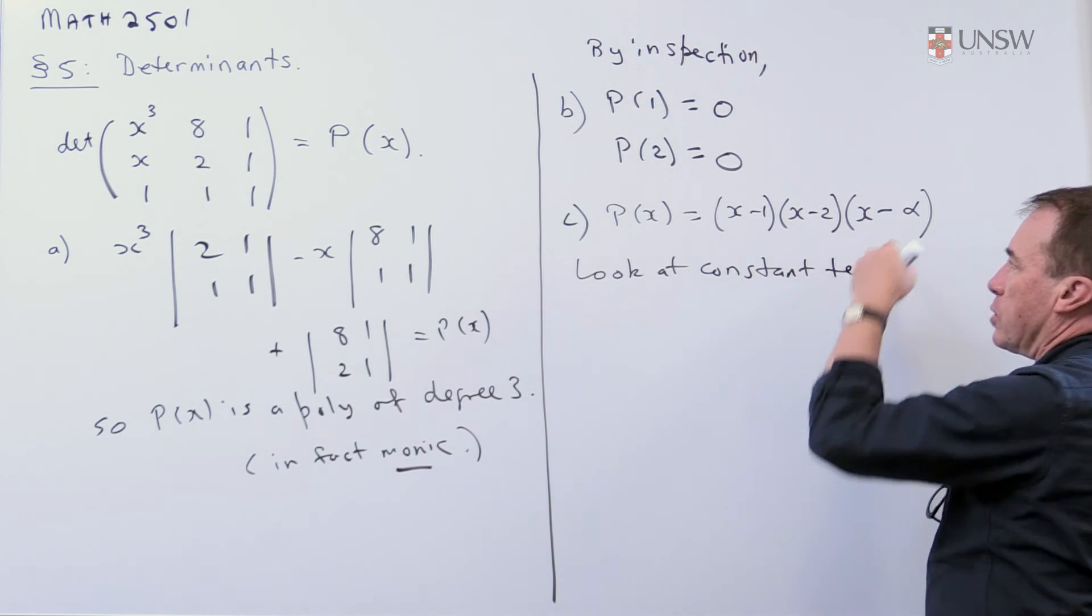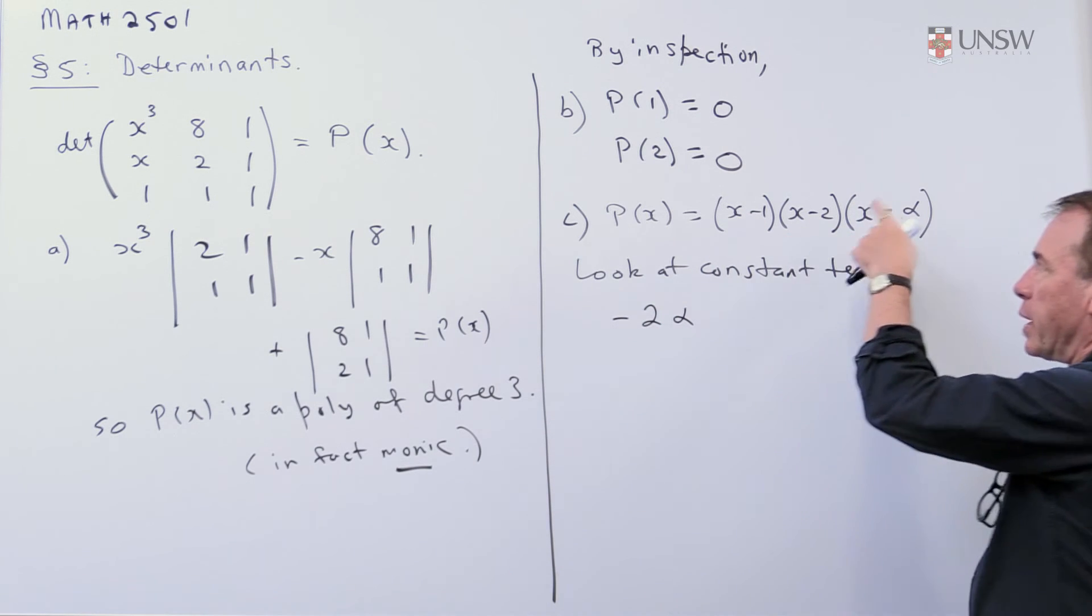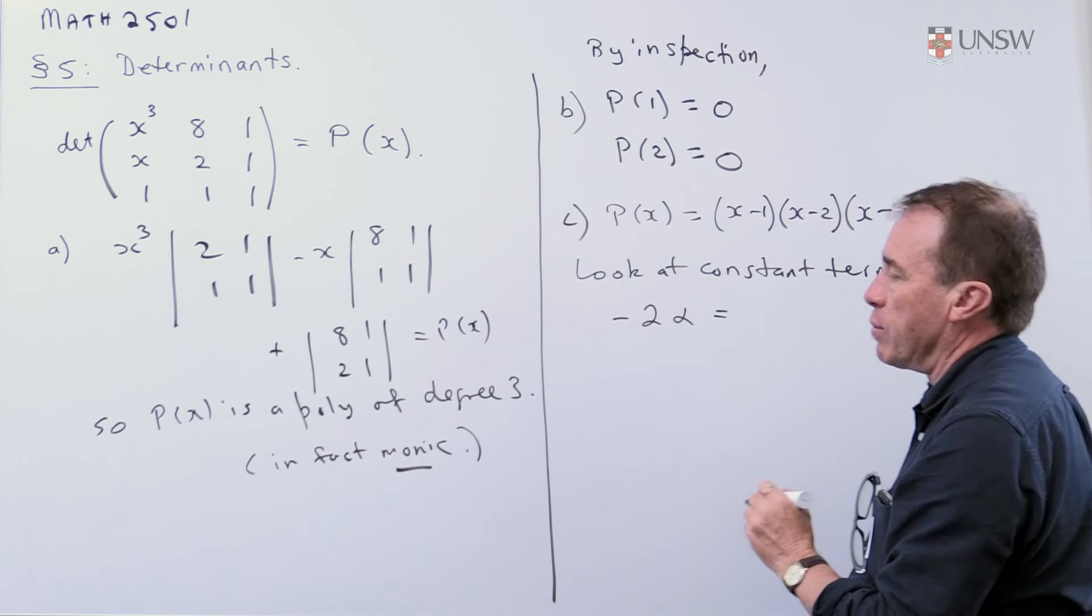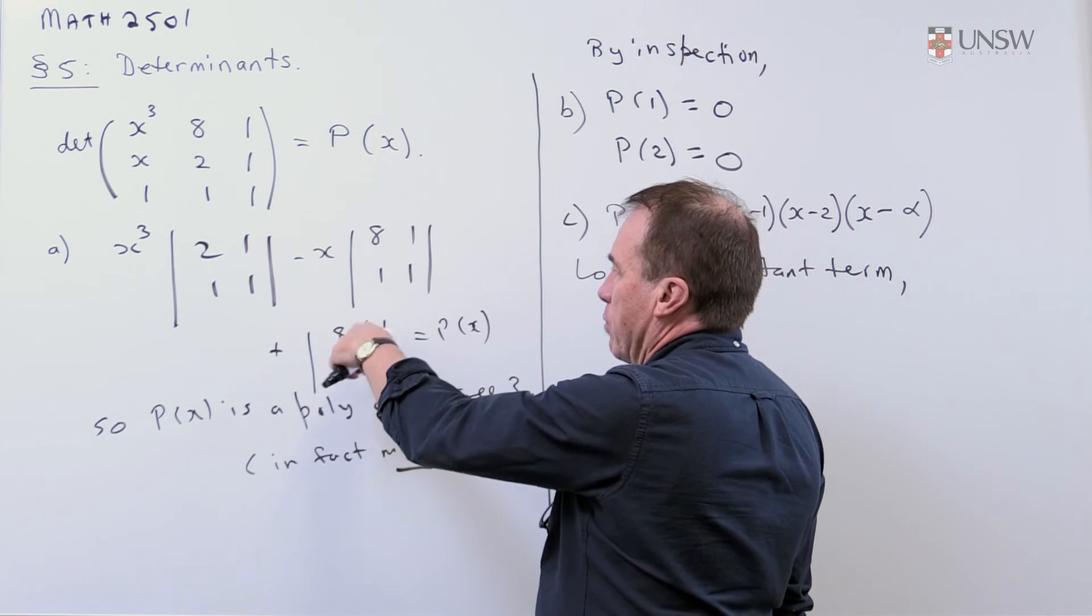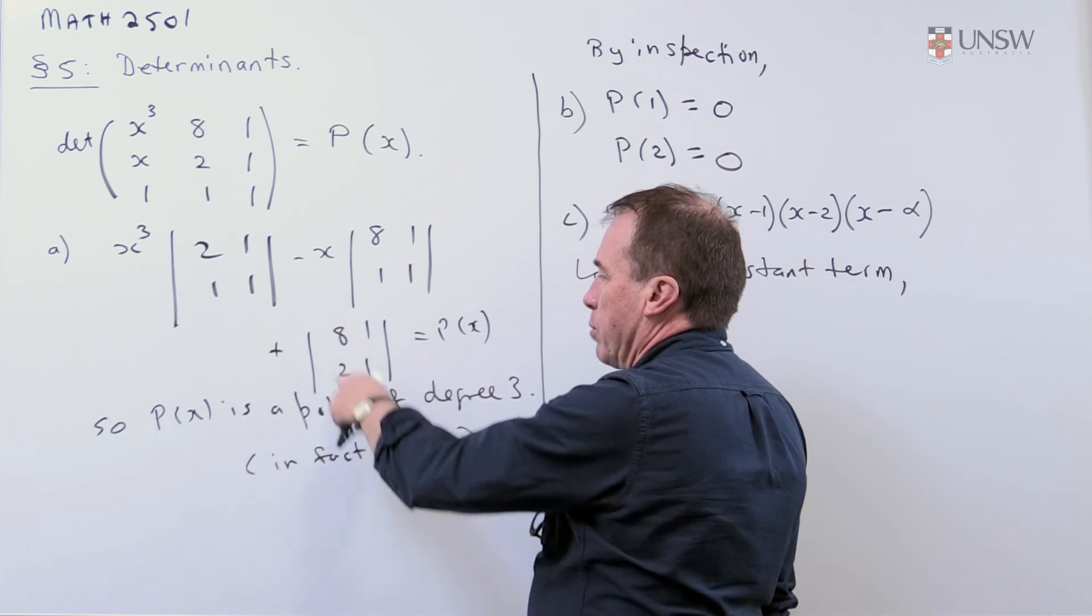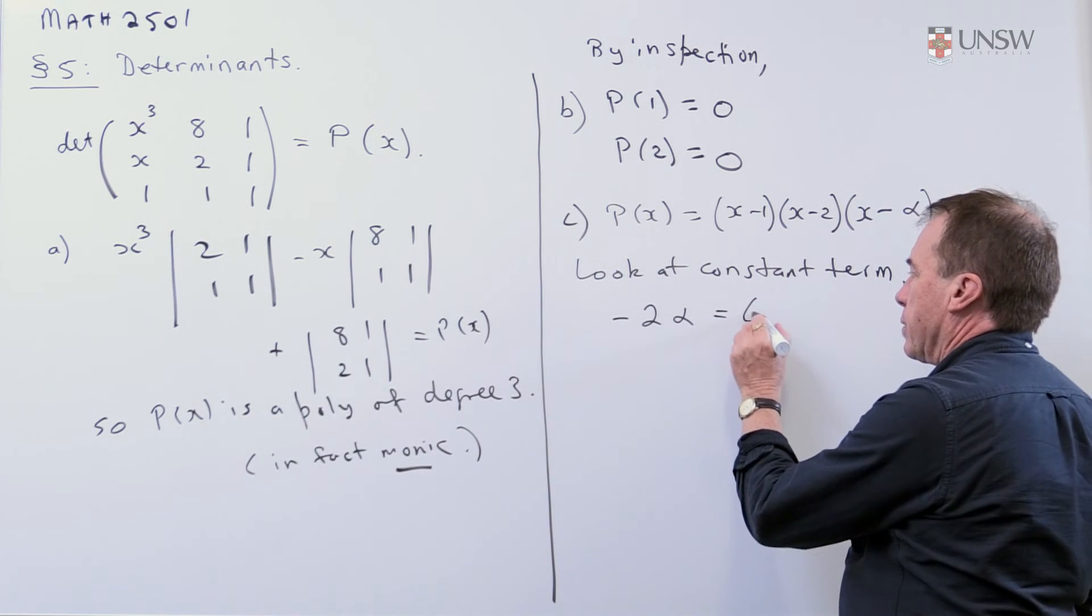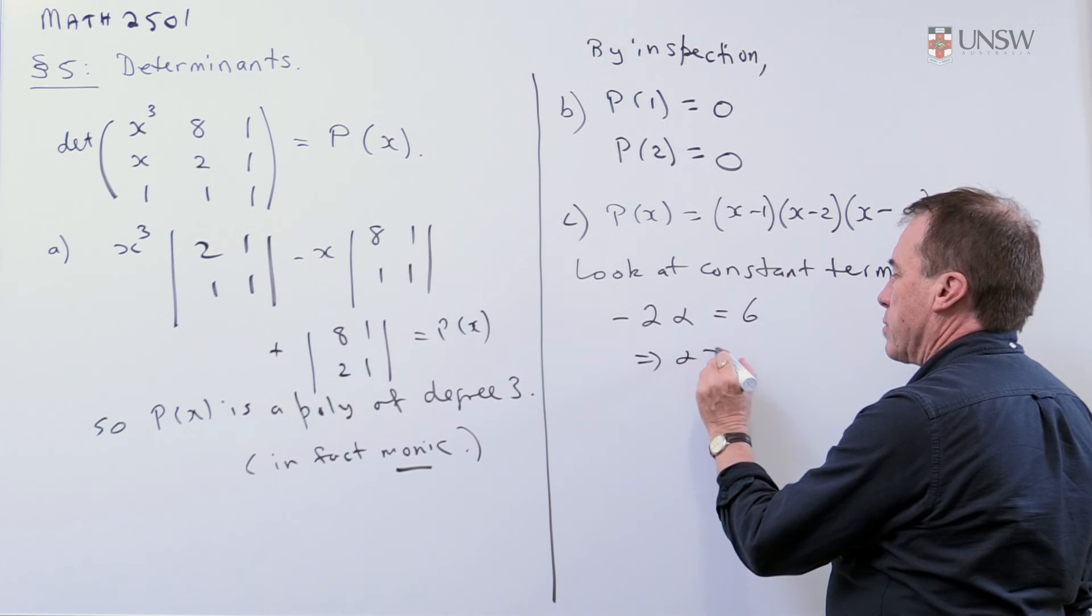So, the constant term here is going to be minus 2 alpha, if I put x to be 0. Now, on the other hand, the constant term over here, well, that came from this last determinant, and I can see from that that that's going to be 6. So, that tells me alpha is minus 3.